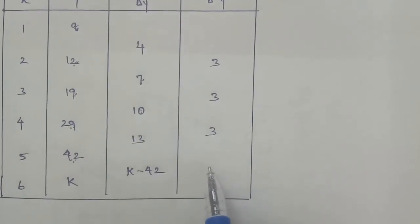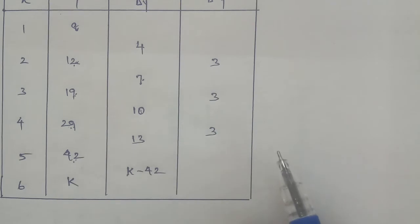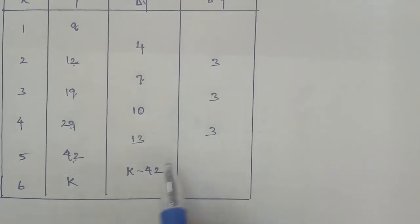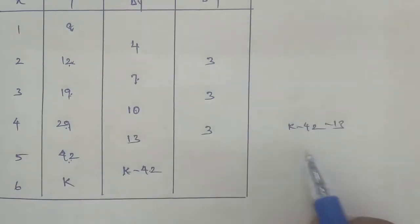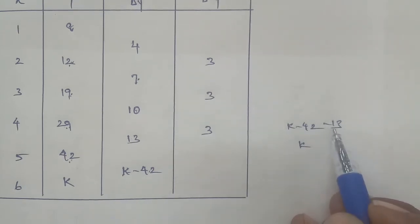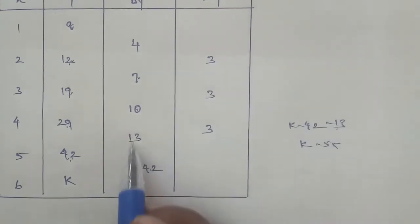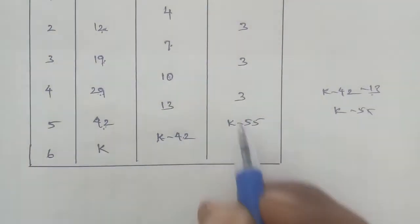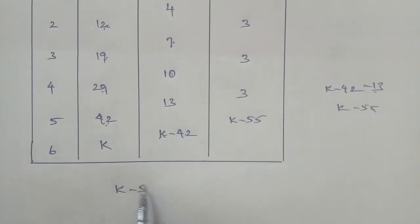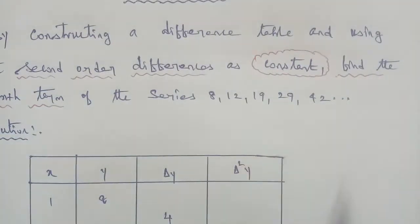The second order differences are constant at the value 3. Since the second differences are constant and equal to 3, any remaining second difference must also equal 3. So the entry involving K minus 42 must also follow this pattern, giving us the equation K minus 55 equals 3.